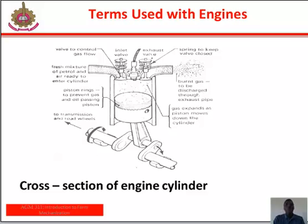Terms used with engines: to understand the differences between spark ignition and compression ignition engines, it is necessary to be familiar with terms commonly used with the engine. Starting with clearance volume — clearance volume is the space above the piston within the cylinder. We also have the top dead center (TDC), which is the position of the crank and piston when the piston is furthest away from the crankshaft while moving upward.